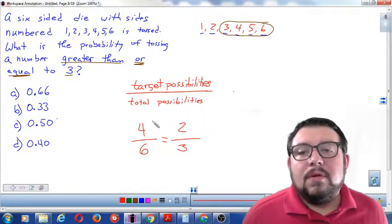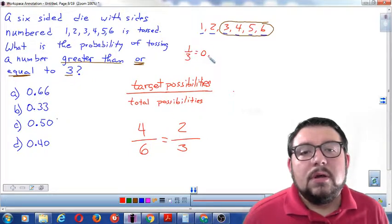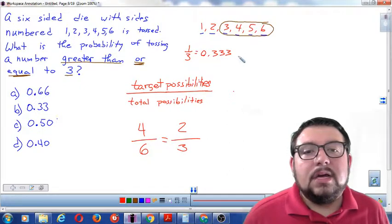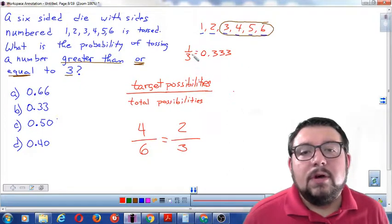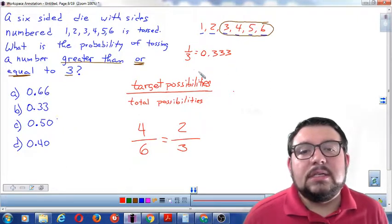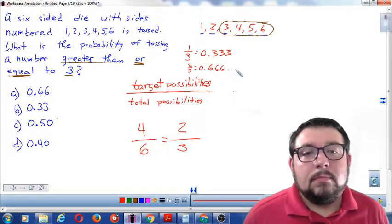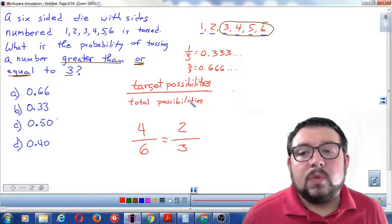Well, remember, 1 third, and I always teach this to my students, is that 1 third equals 0.333, and it keeps on going forever. Well, then 2 thirds would be twice as much. So 2 thirds would be 0.66666666.